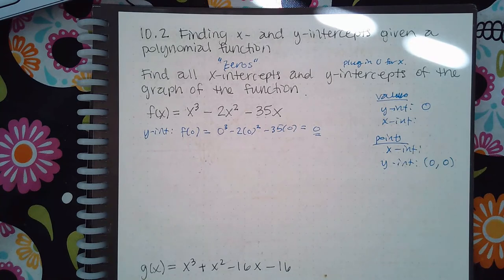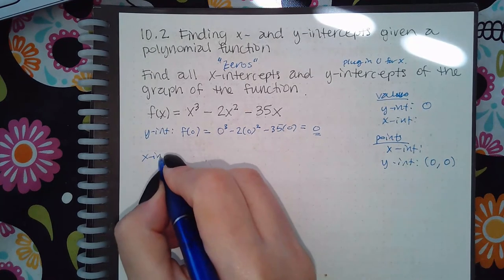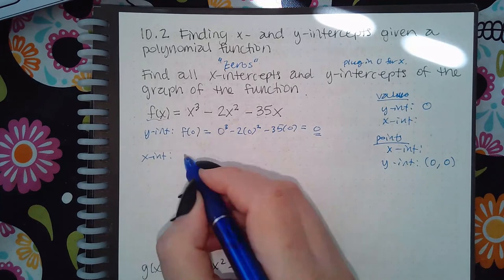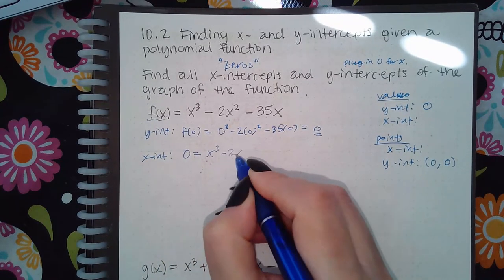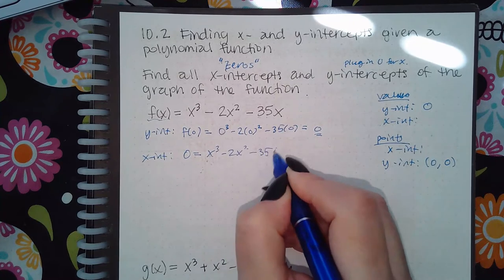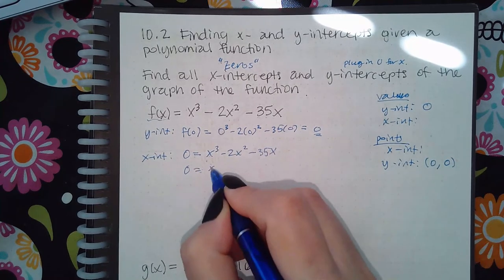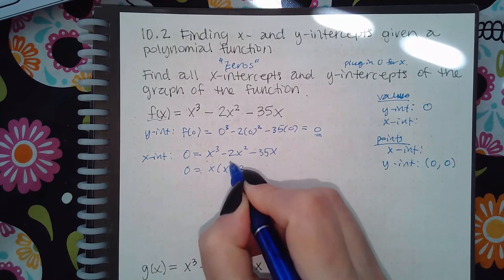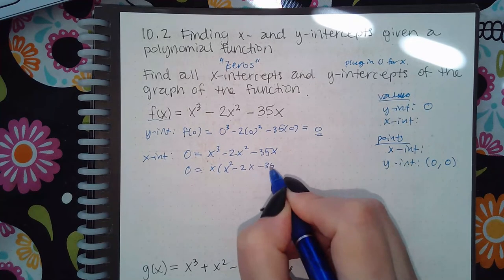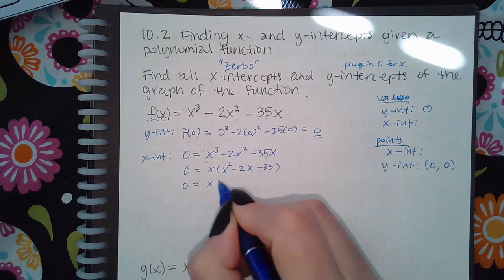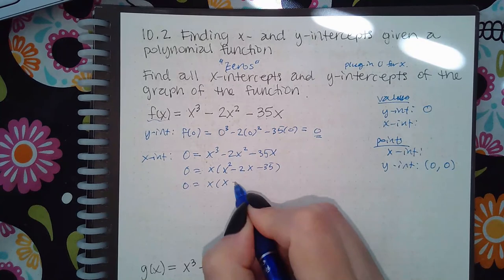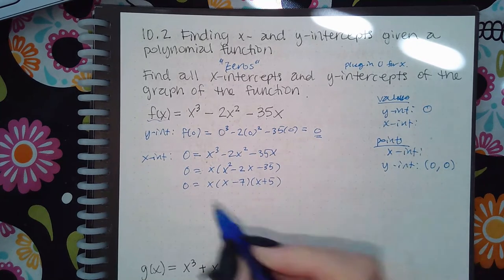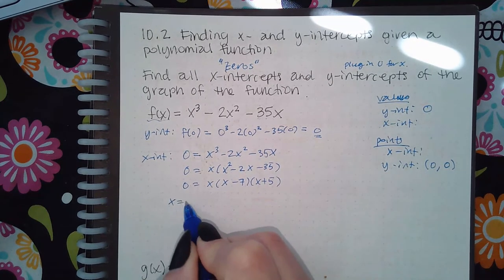The x-intercept is when you take the y value and equal it to zero. But in order for me to figure this out, I have to actually factor. So I'm going to factor out the common factor first, and then I will factor the resulting trinomial: x minus 7 and x plus 5. Then I'll set each factor equal to 0.